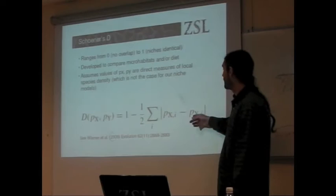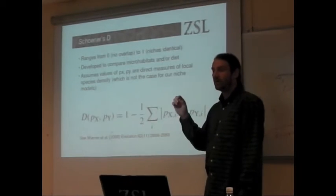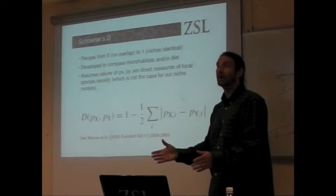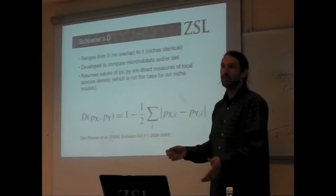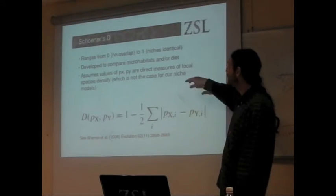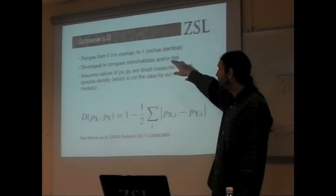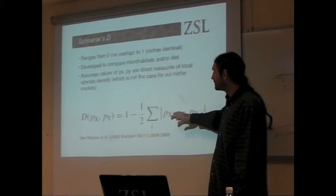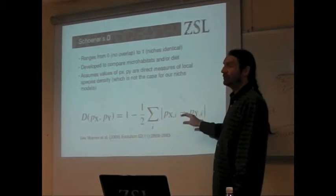And essentially these two statistics, I don't have to worry about the values. Essentially they're a measure of correlation between two niches that score between zero and one. So the equivalent of a Pearson correlation coefficient where zero means they're completely different and one means they're completely the same.